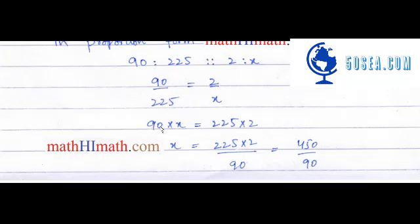Now x is being multiplied by 90, so 90 will go to the other side and divide. So x equals 225 multiplied by 2 divided by 90.